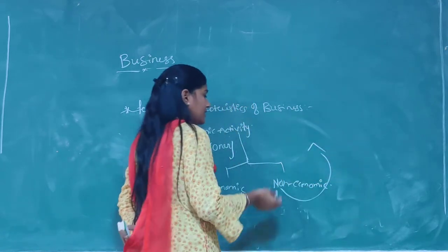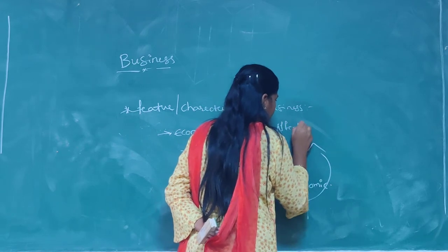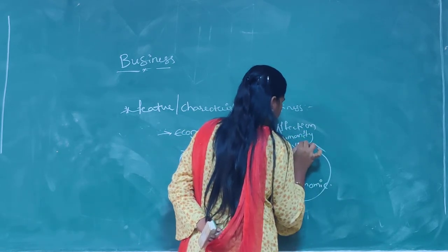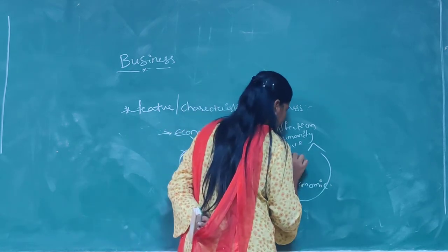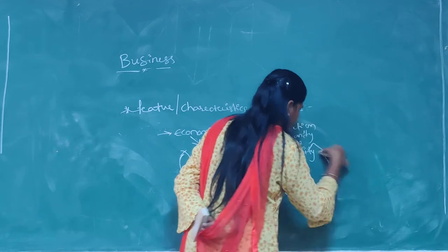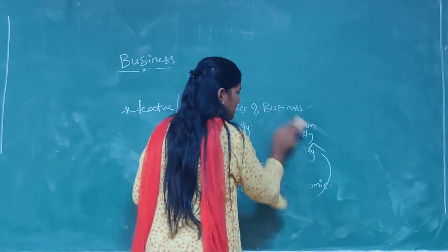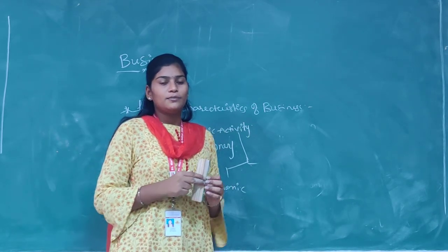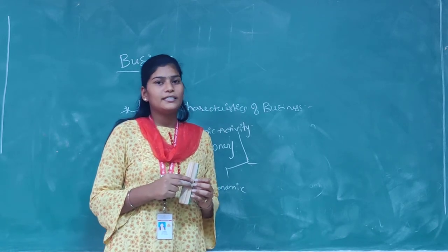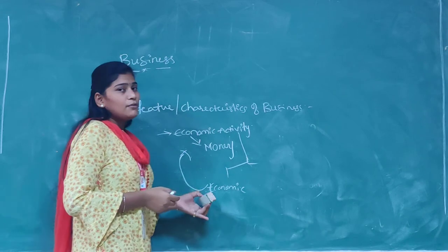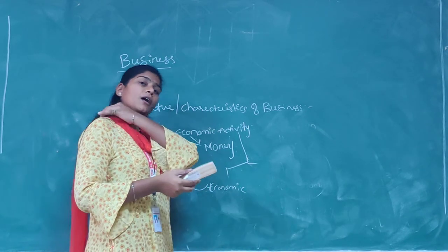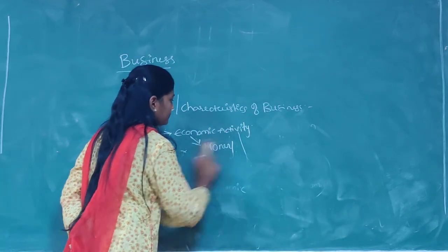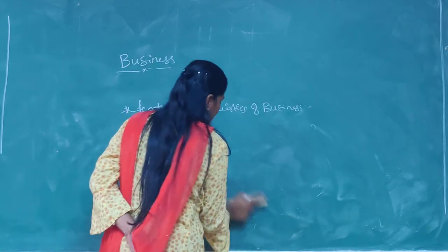Economic activity is related to money, as discussed. Non-economic activity is related to affection, humanity, love, or personal matters. For example, if you are making a cake for your mother and giving it to her to make her happy, it is a non-economic activity because you are not earning anything from it. But if you make the same cake and sell it to someone to earn profit or money, then it would be called an economic activity. So business is an economic activity.